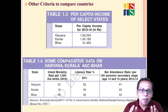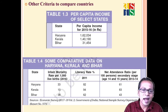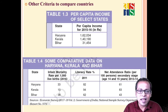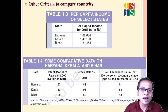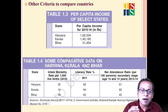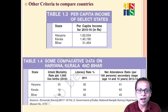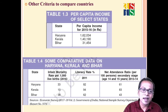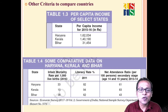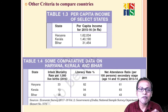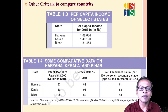So if we give importance to health and education apart from per capita income, overall Kerala should be given the number one position compared to Haryana. Kerala's income may be somewhat lower, but in other criteria Kerala is doing better. This is why we should not give 100% reliance to only one criterion — income. Health and education are also very important.